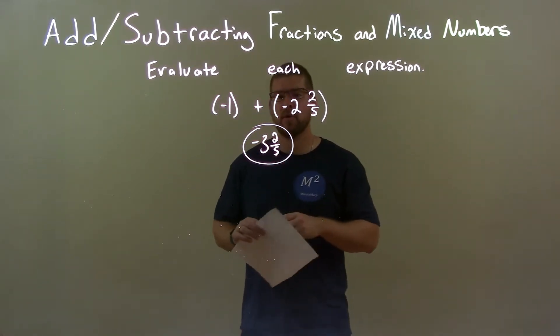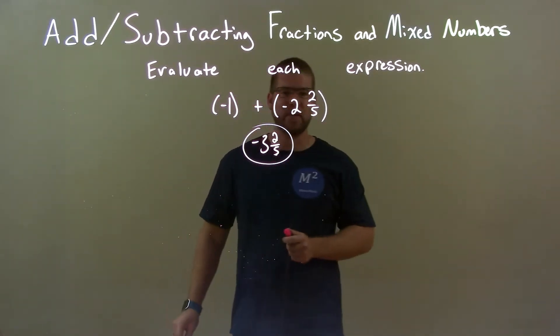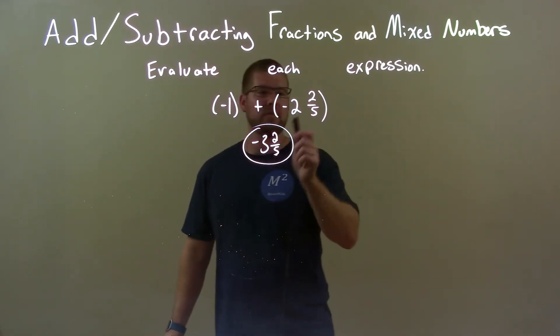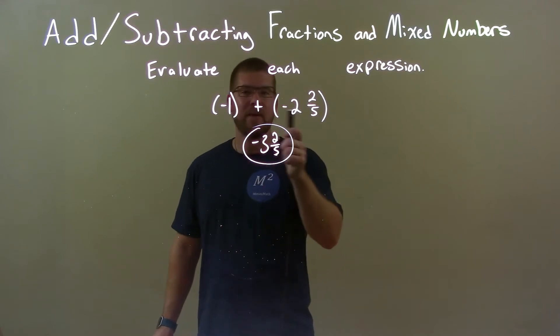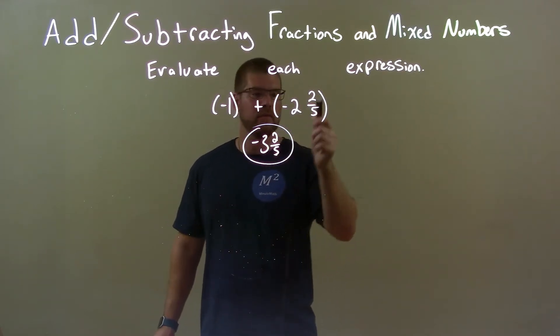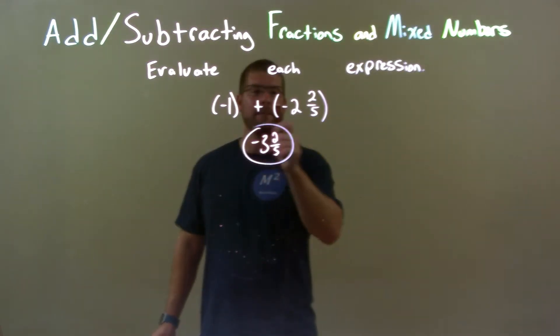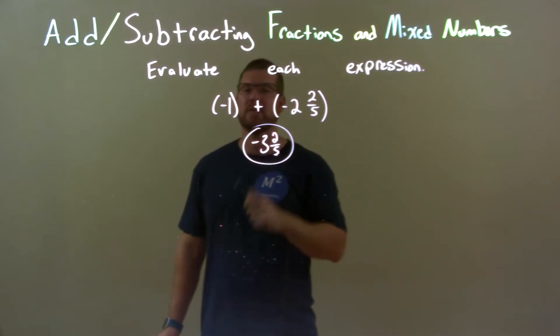So, quick recap. We're given negative 1 plus a negative 2 and 2 fifths. We're adding these two together. We look at the first part here, negative 2 and the negative 1. And we added those together and brought down the 2 fifths as well. So, that combines to be a negative 3 and 2 fifths.